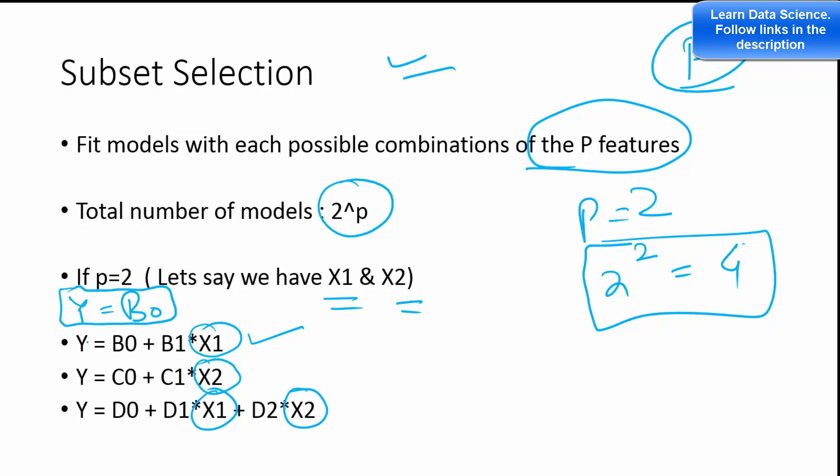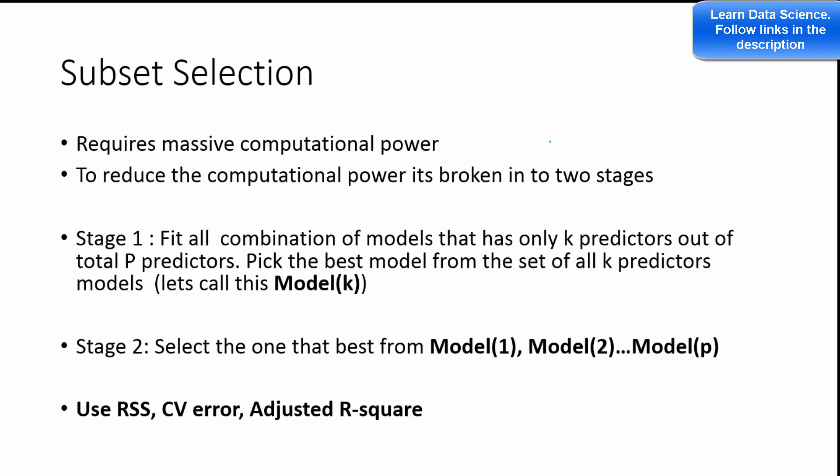So that is considered to be the null model. If you're familiar with statistical analysis, you must be familiar that in the result you always get a null model. So that's the fourth model we are talking about. Every time we are going to have 2 to the power p models, where p is the number of features you have.